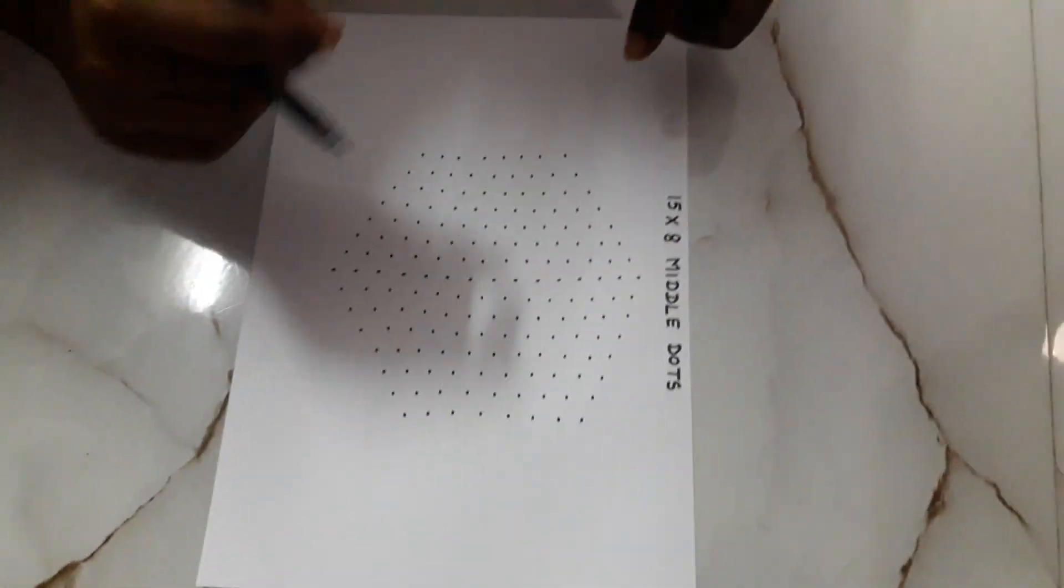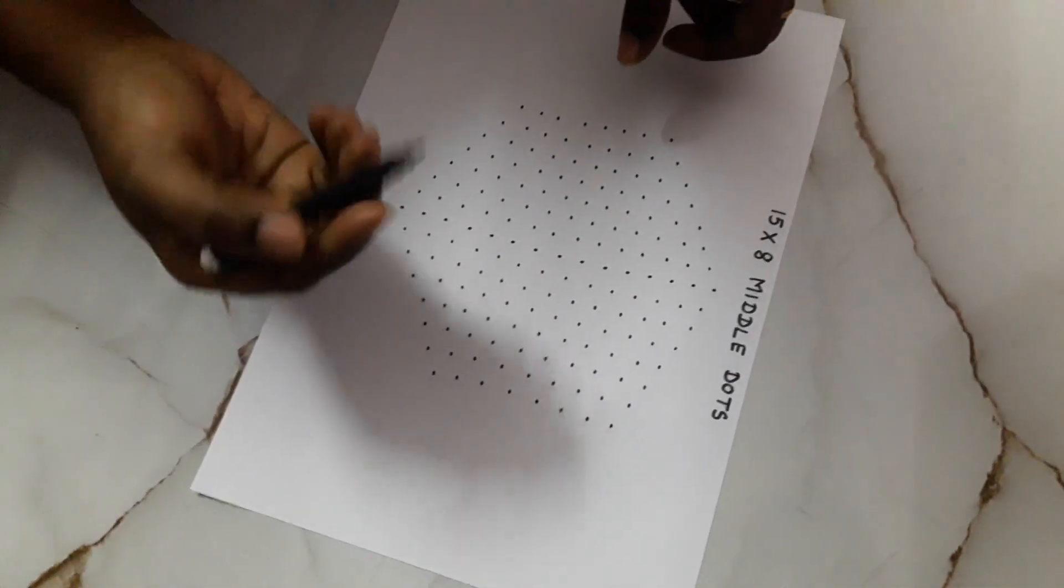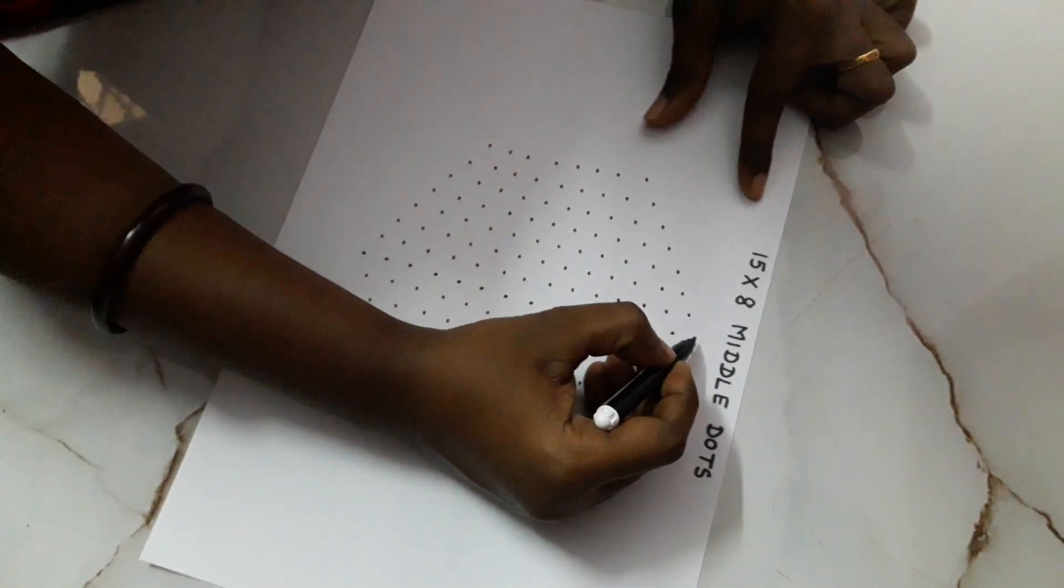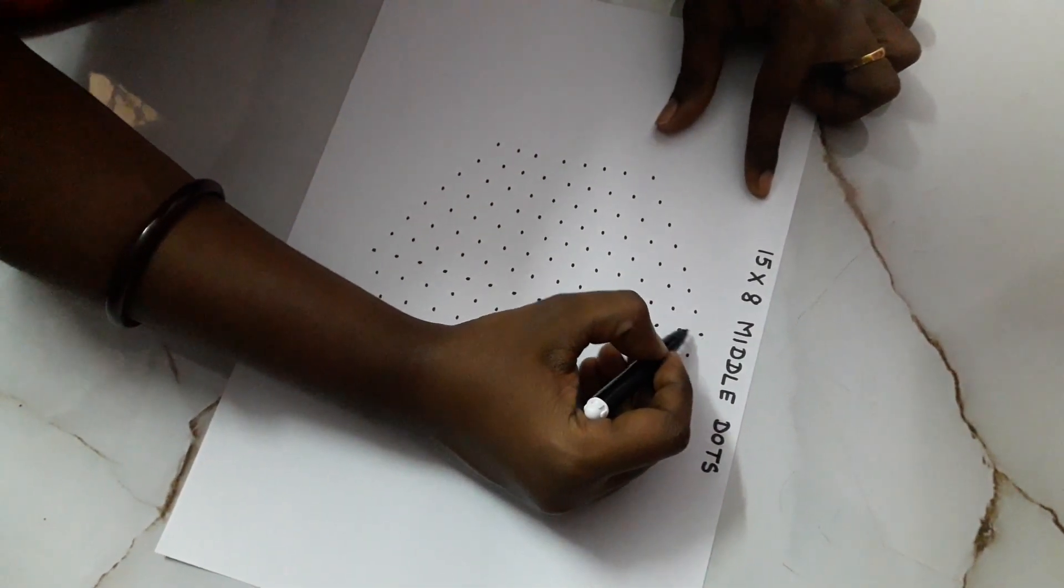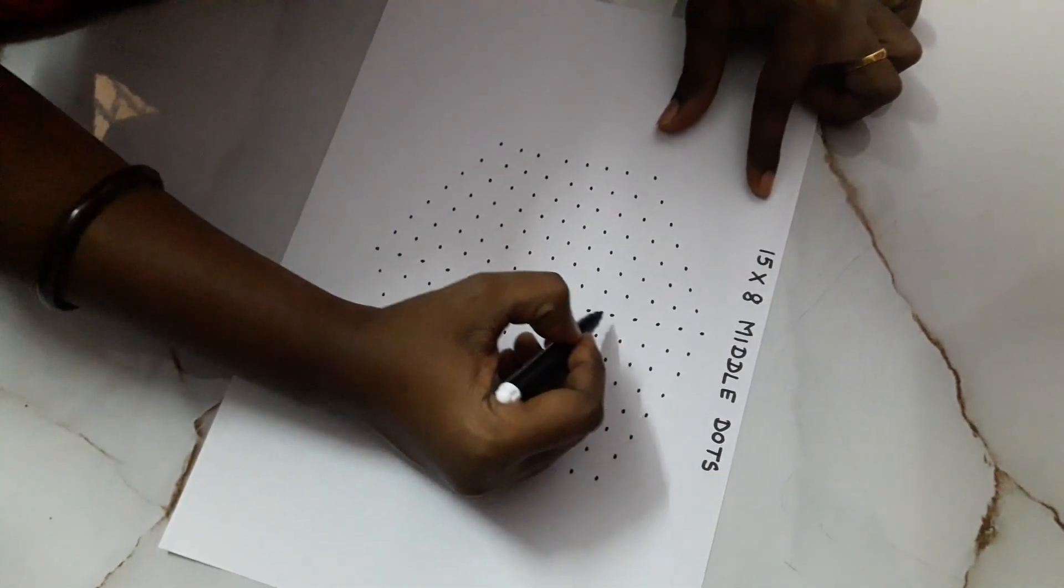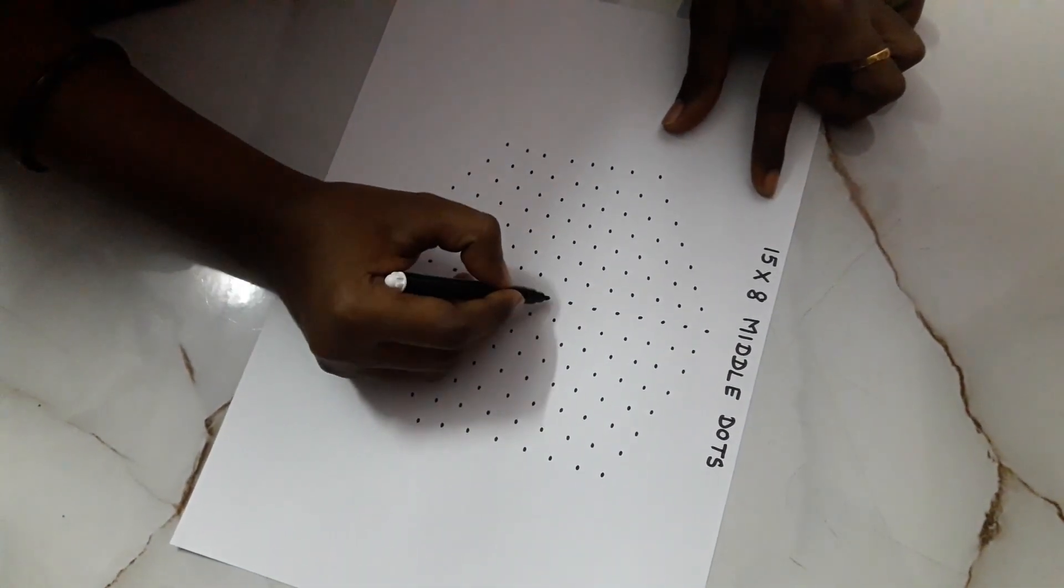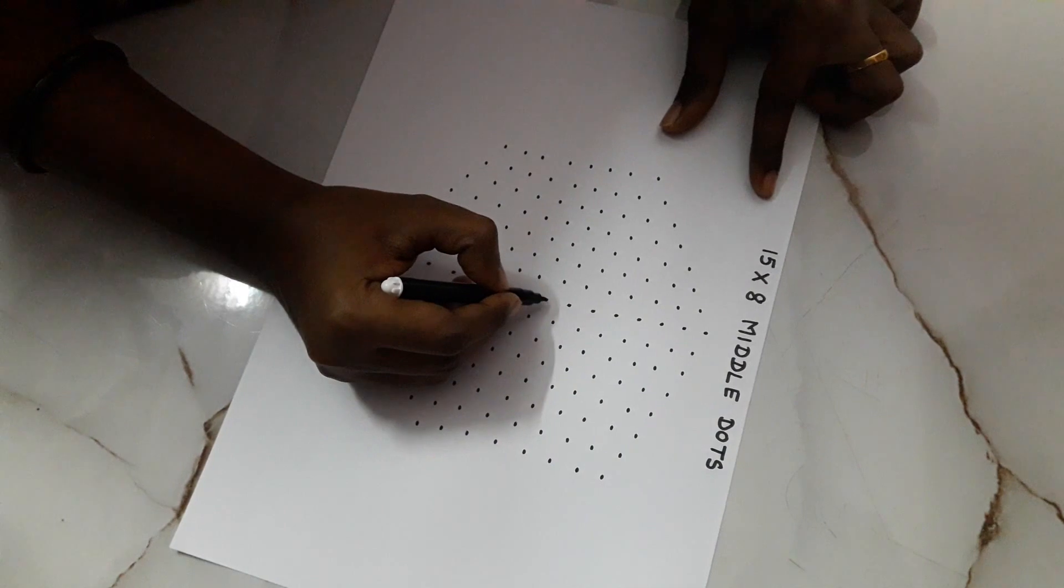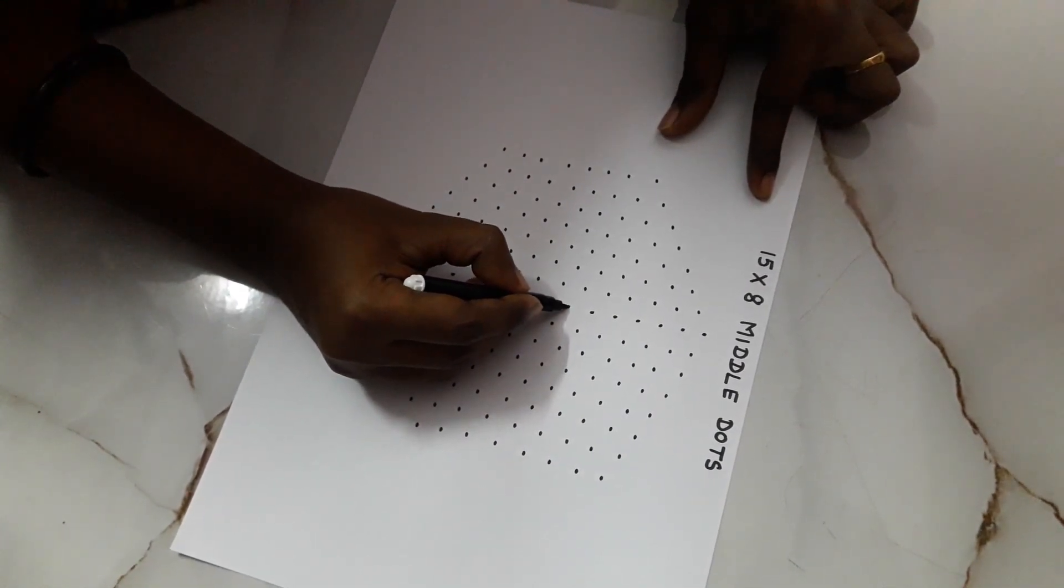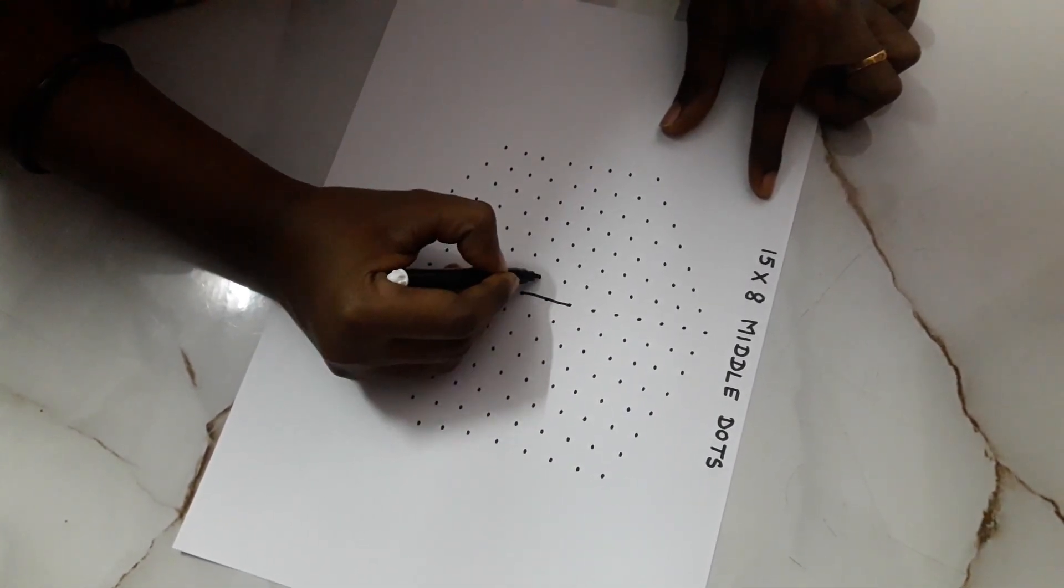Now, I am going to show how to draw the flower rangoli. From the top, you have to count: 1, 2, 3, 4, 5, 6, 7, 8. From the 8th dot, it will be center. From there, you have to draw a line like this.